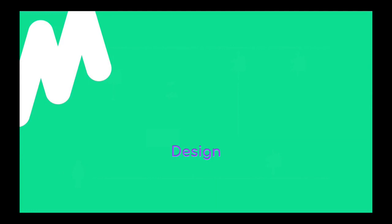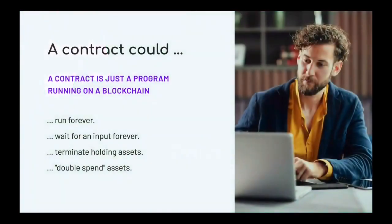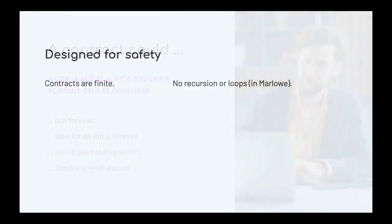Now let's think about how to design a language based on those ingredients. Designing a language of contracts means designing a programming language — a smart contract is just a program running on a blockchain. A contract could in principle run forever, or get stuck waiting for an input forever. It could also terminate while holding onto assets, locking them up forever. Potentially it could even double spend. So there are a whole lot of security issues a contract might have.